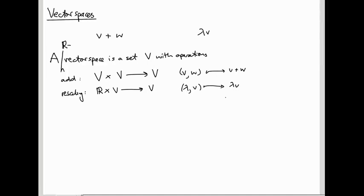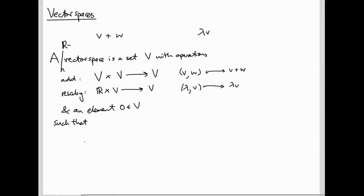These don't have to be addition and rescaling of column vectors — these could be addition of functions and rescaling of functions, or any other context in which you have addition and rescaling. We also need to have an element 0 in V, which we call the origin. And we need some conditions or axioms for these operations to satisfy. These are the basic axioms you need in order to do all the kinds of arguments we've done so far in the course. They're all things that are going to look completely obvious.